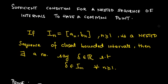In the previous video I gave a counter example saying that not all nested intervals might have a common point. But here I am giving a sufficient condition for a nested sequence of intervals to have a common point.